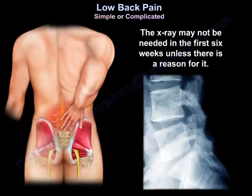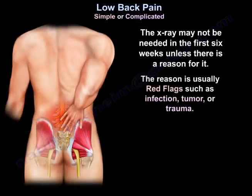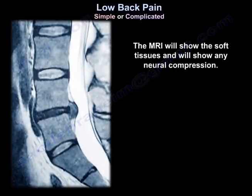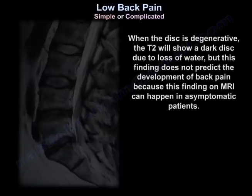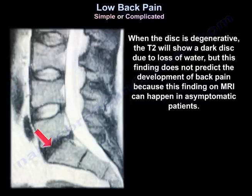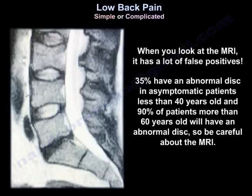X-ray may not be needed in the first six weeks unless there are red flags such as infection, tumor, or trauma. When doing radiological studies, start with an X-ray before an MRI. The MRI shows soft tissues and neural compression; a dark disc on T2 indicates degeneration due to water loss. However, 35 percent of asymptomatic patients under 40 have an abnormal disc on MRI, and 90 percent of patients over 60 have one, so be careful interpreting MRI findings.